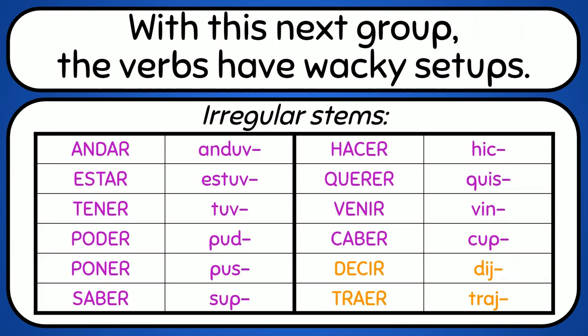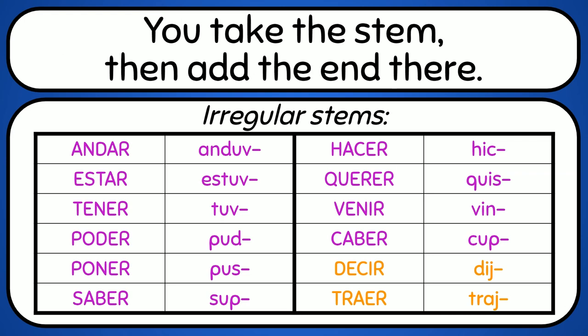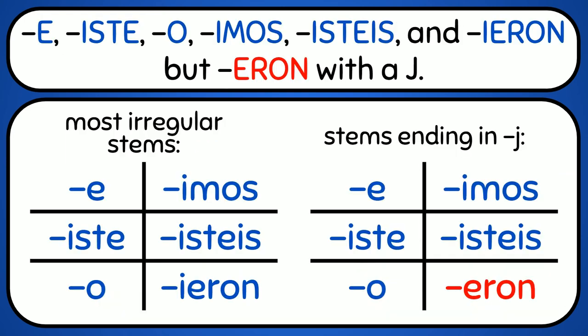With the next group, the verbs have wacky stems. You take the stem, then at the end there: e, aste, o, amos, asteis, aron, except with j.